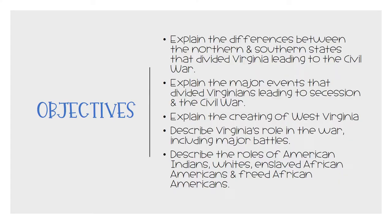By the end of this unit, you should be able to do the following: explain the differences between the northern and southern states that divided Virginia leading to the Civil War; explain the major events that divided Virginians leading to secession and the Civil War; explain the creation of West Virginia; describe Virginia's role in the war, including major battles; and describe the roles of American Indians, Whites, enslaved African Americans, and freed African Americans.